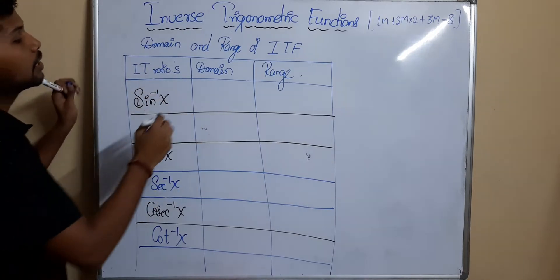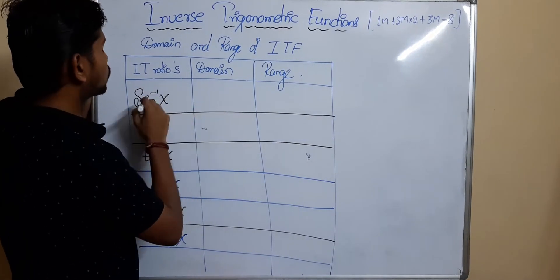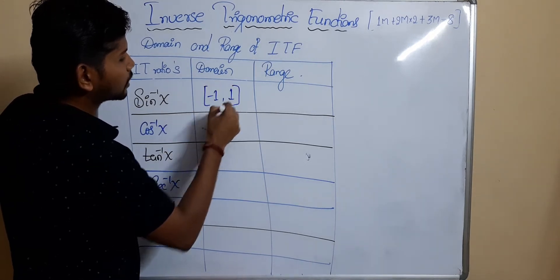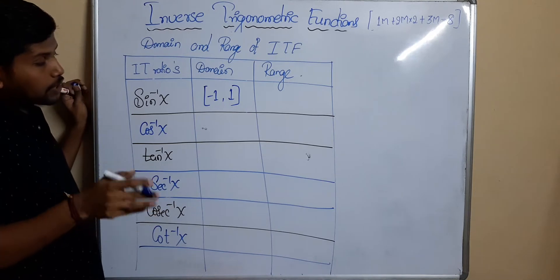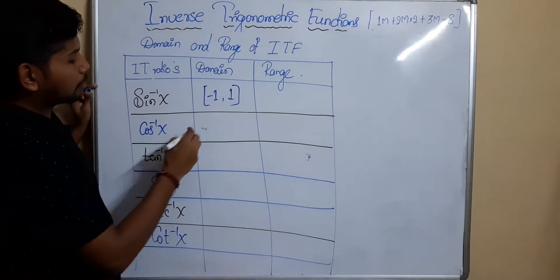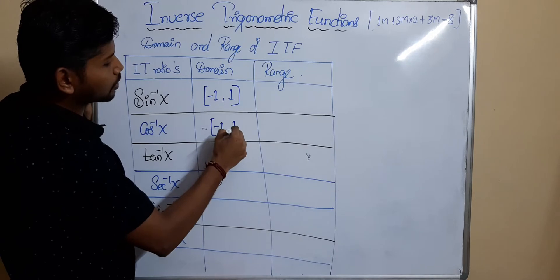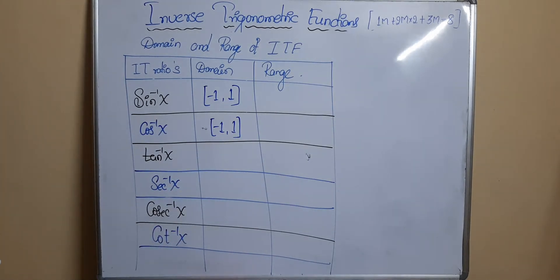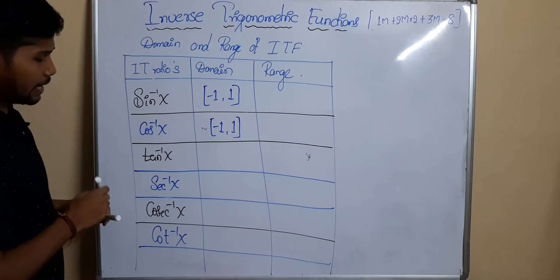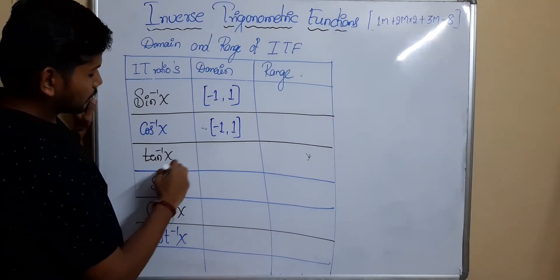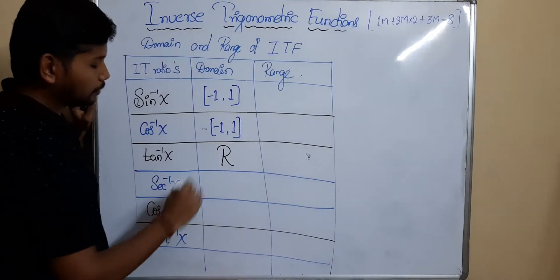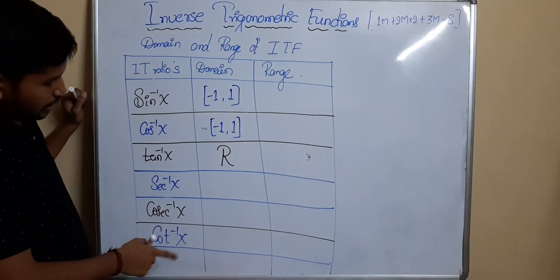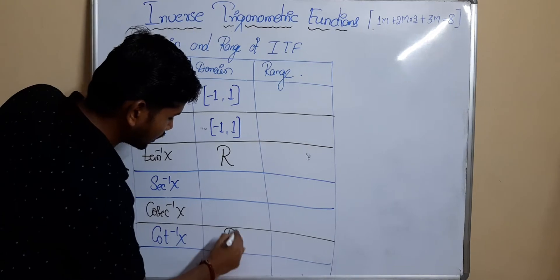First I will cover the domains. The domain of sin⁻¹(x) is [-1, +1]. Which other function has the same domain? Yes, exactly — cos⁻¹(x) is also having the domain [-1, +1]. Next, tan⁻¹(x) is having the domain as the real number system, and one more inverse trigonometric function having the same domain — that is cot⁻¹(x).